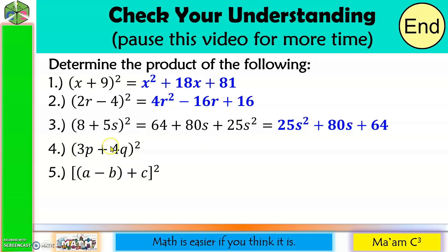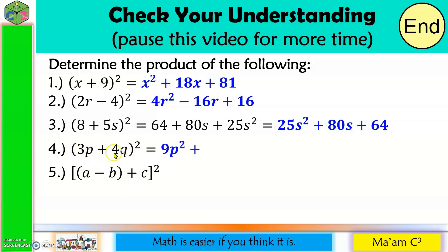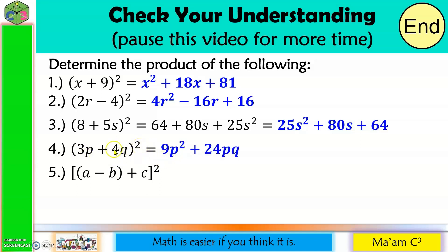Number 4: 3 squared is 9, p squared is p squared, so 9p squared. Copy the sign. 3 times 4 is 12, times pq is 12pq, times 2 is 24pq. 4 squared is 16, q squared is q squared — so plus 16q squared.